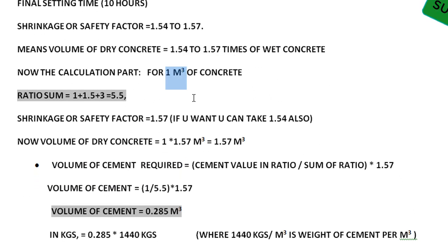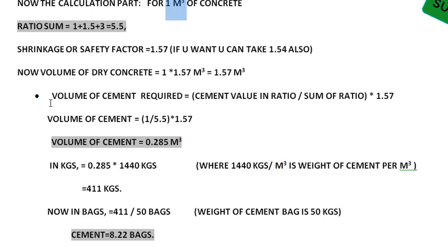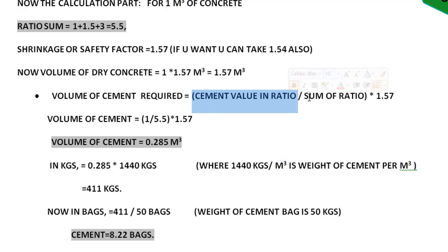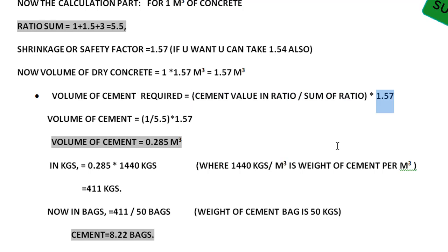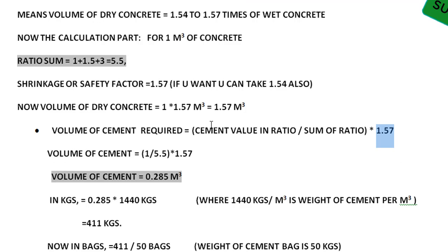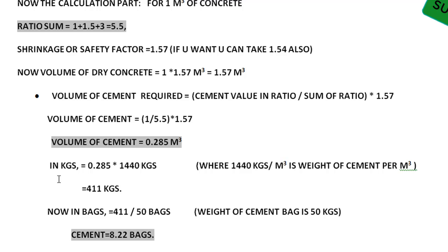Volume of cement required is calculated as: (cement ratio / sum of ratio) multiplied by volume of dry concrete. That is (1 / 5.5) multiplied by 1.57, which equals 0.285 cubic meters. So the volume of cement is 0.285 cubic meters.